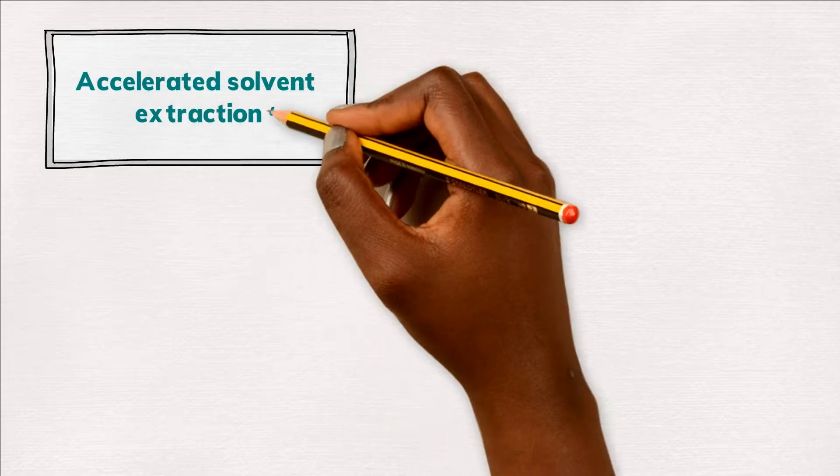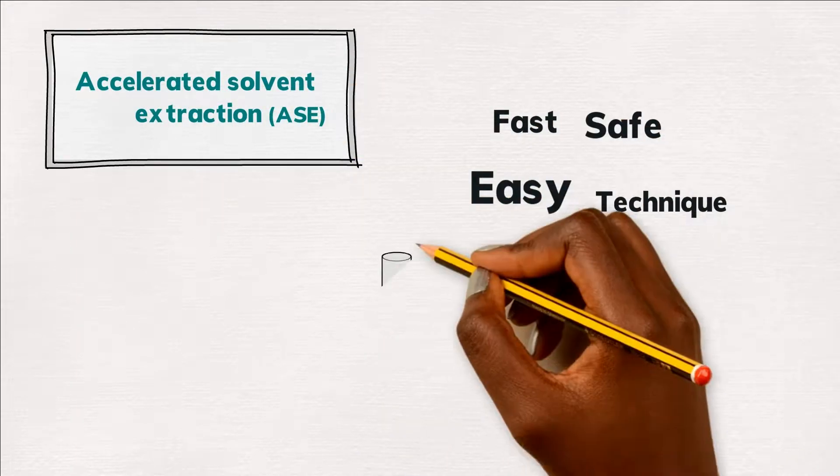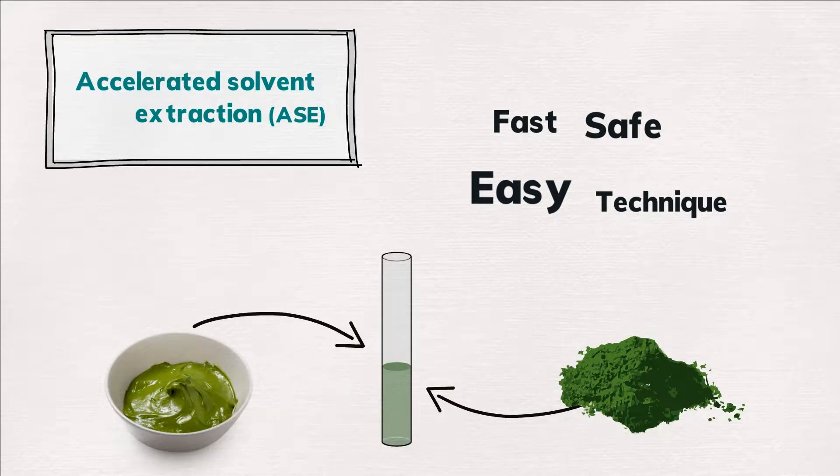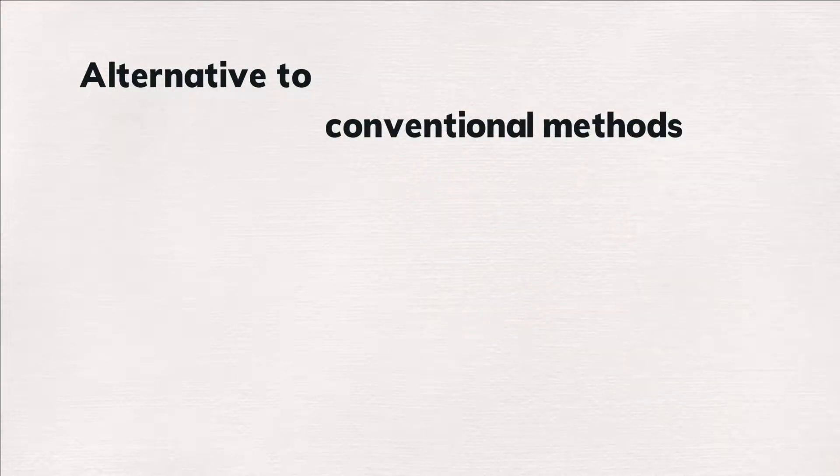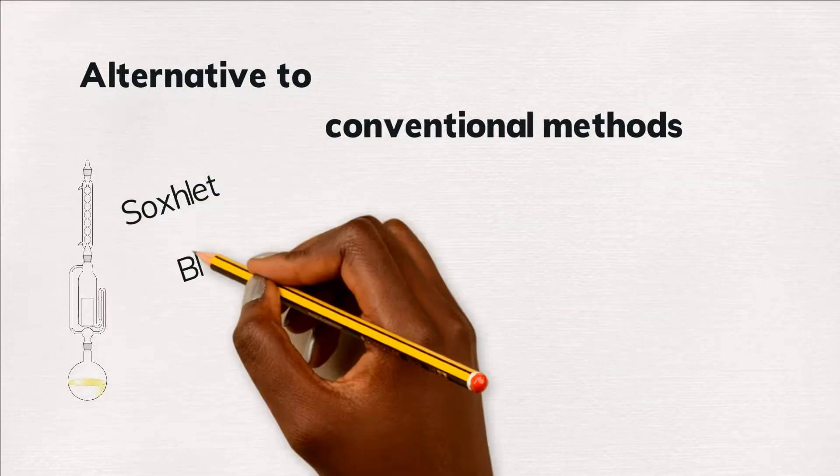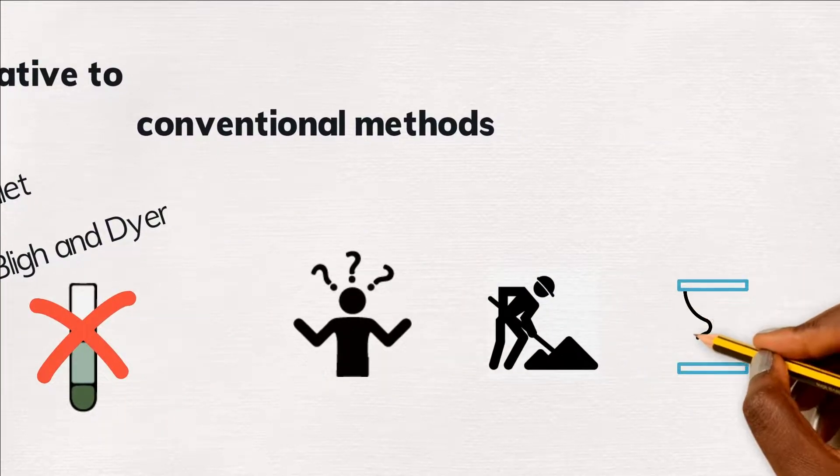Accelerated solvent extraction is a fast, safe and easy technique to extract analytes from solid and semi-solid samples. It is used as an alternative to conventional extraction methods such as Soxhlet or Bligh & Dyer, which are difficult, labor-intensive and time-consuming.